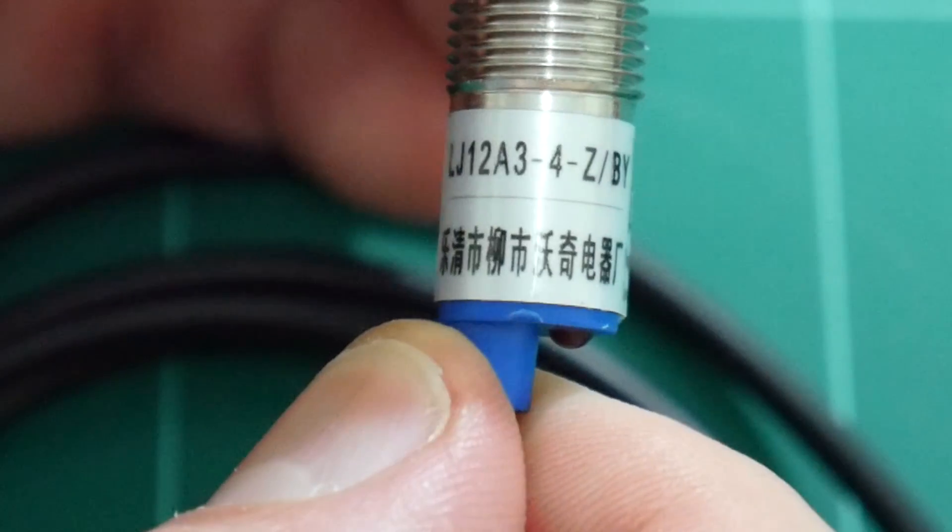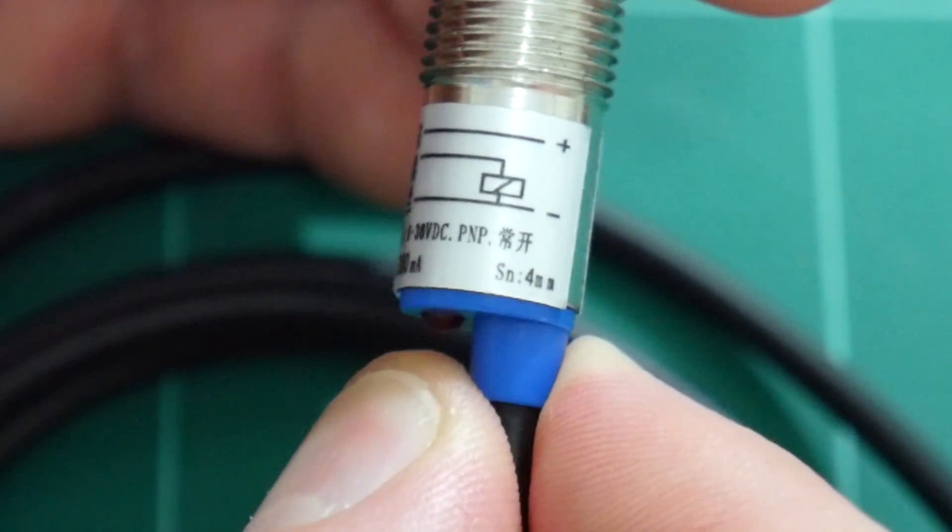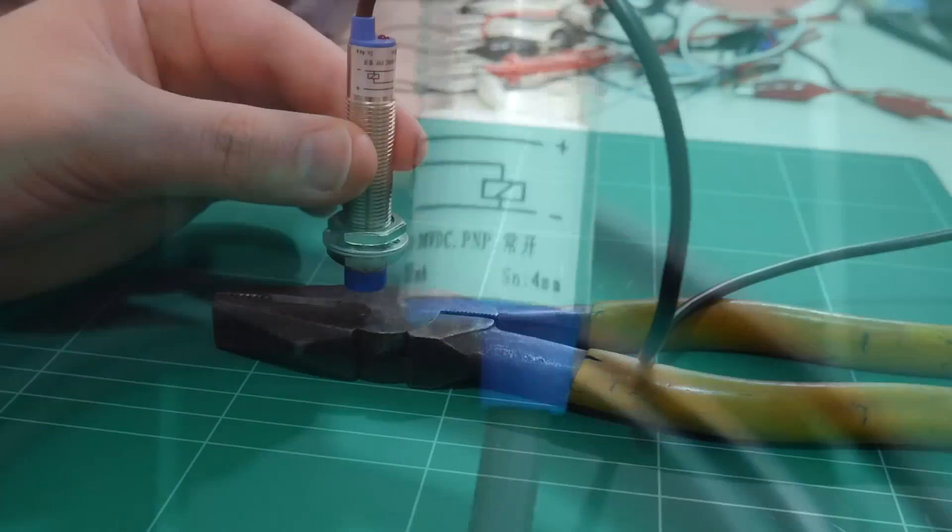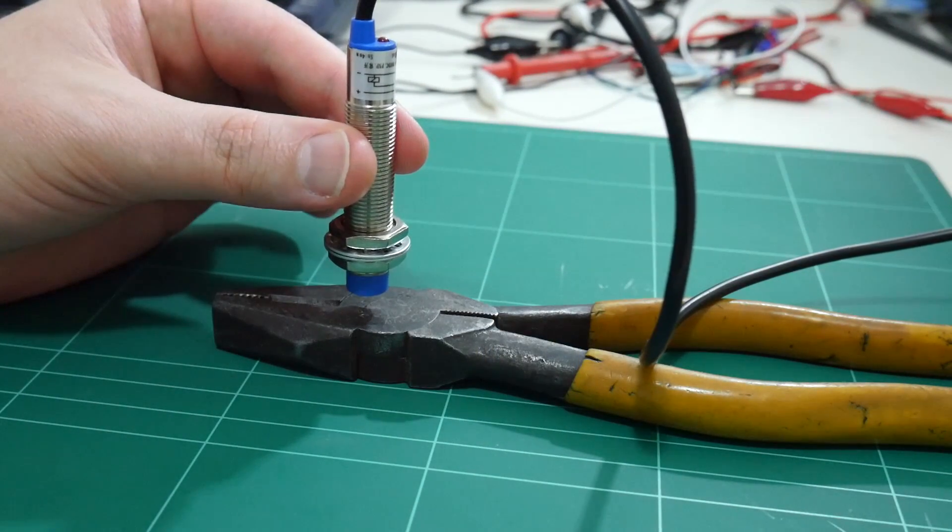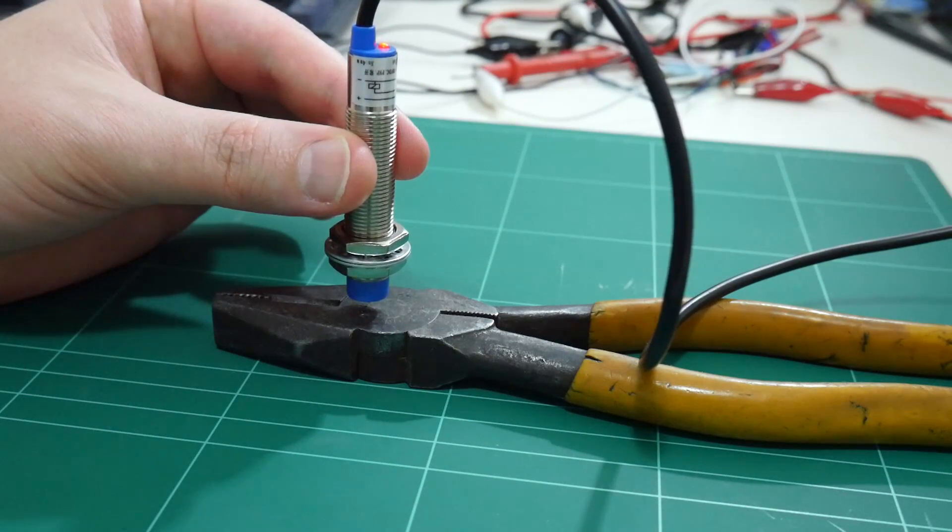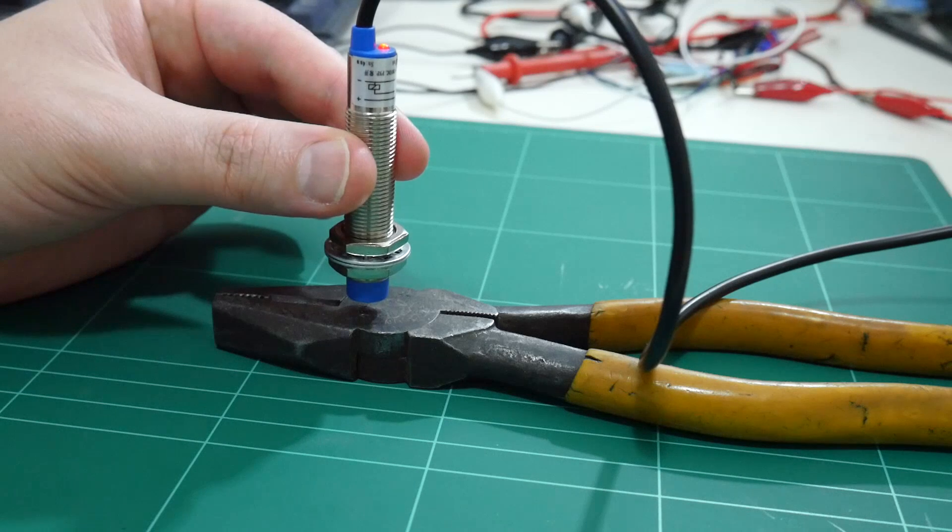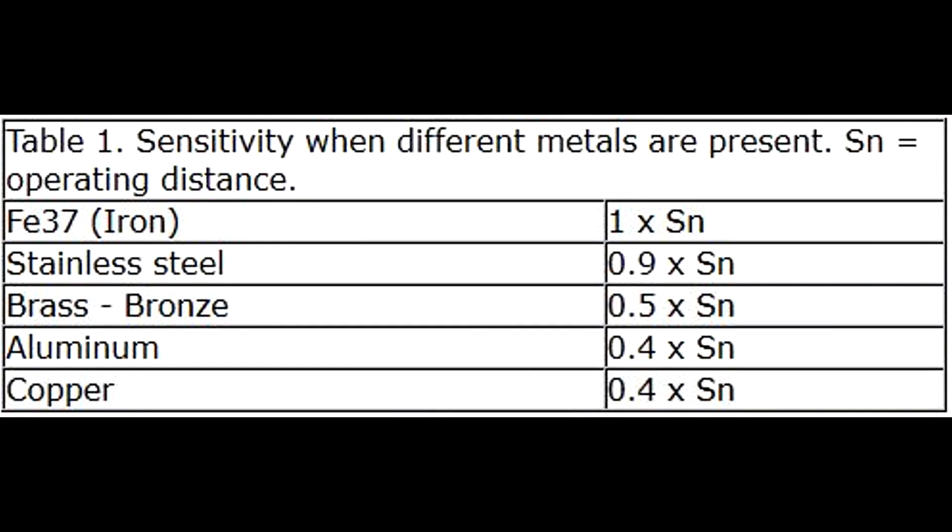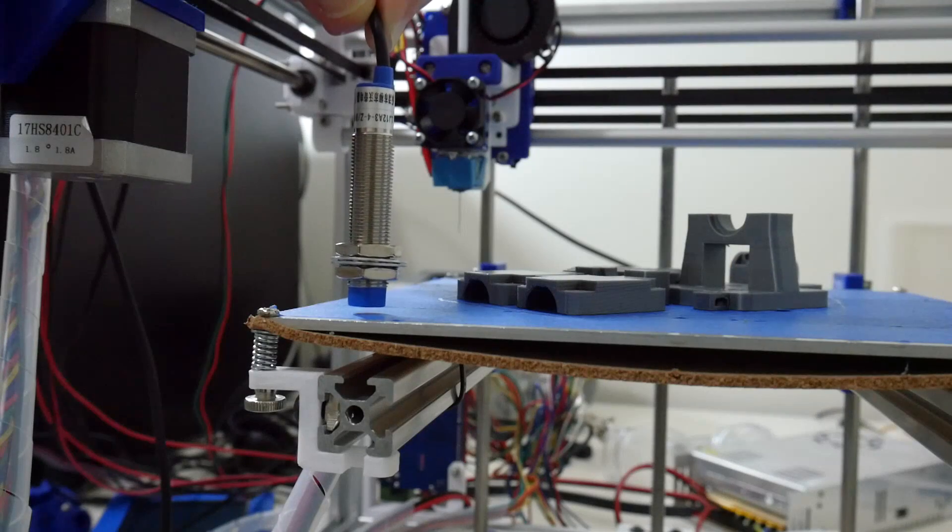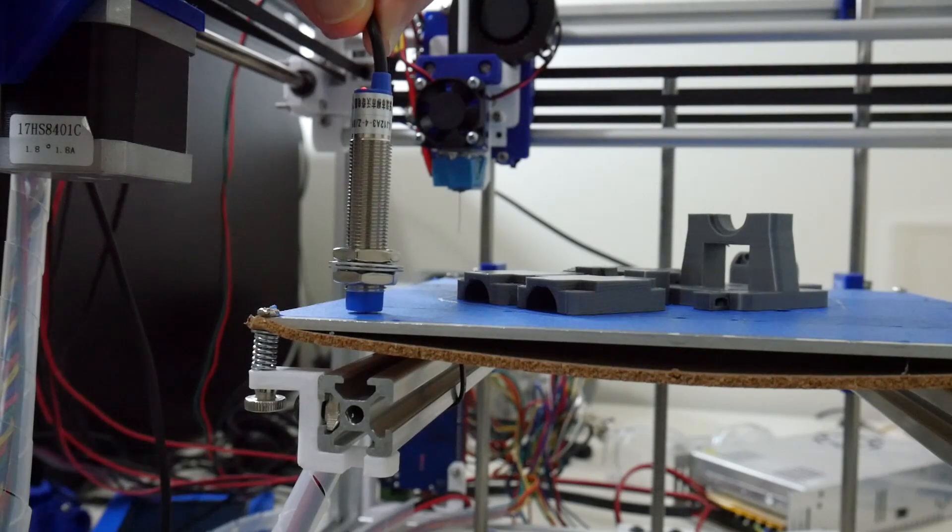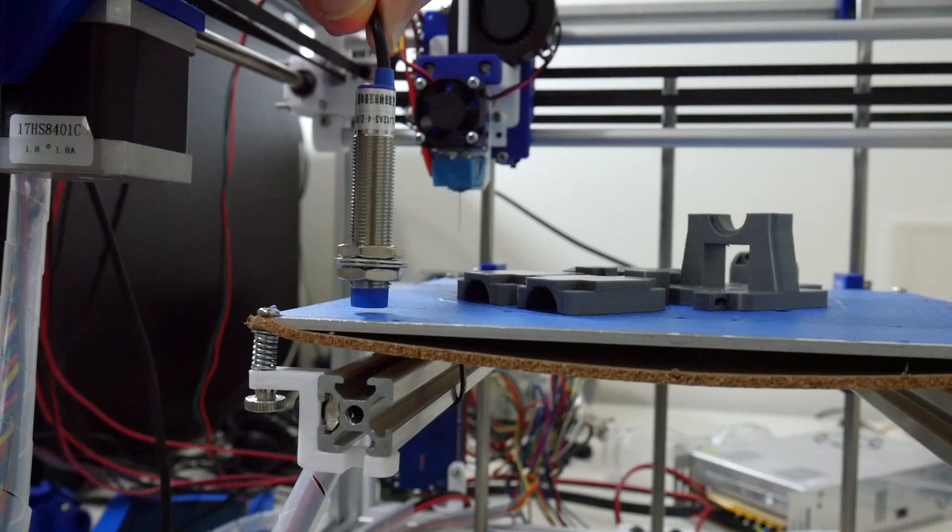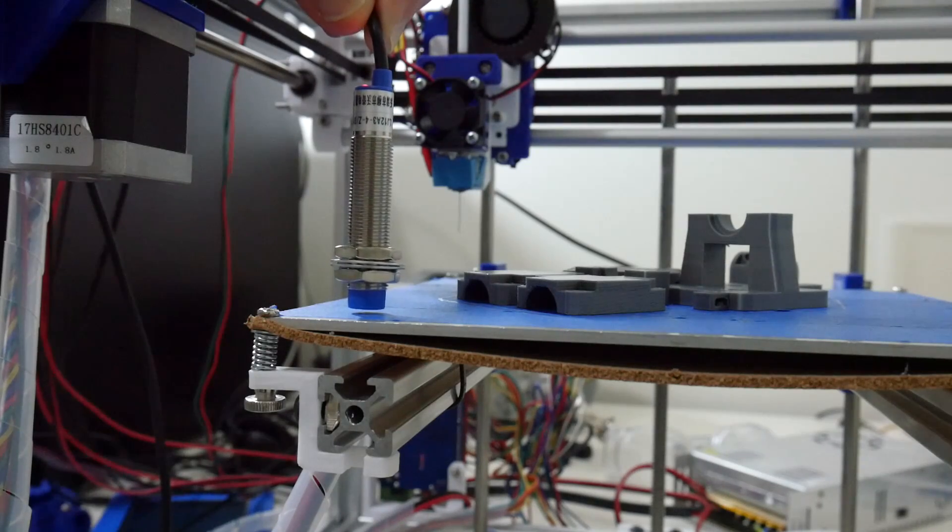These sensors also stipulate a detection distance for triggering the output, usually in the millimeter range. A common detection distance is 4 millimeters. However, the rated distance is when sensing iron. In a 3D printer, we are sensing aluminum. According to the datasheet, the sensitivity is reduced to 40 percent when sensing aluminum. So for a 4 millimeter rated probe sensing an aluminum bed, the detection distance is 1.6 millimeters.